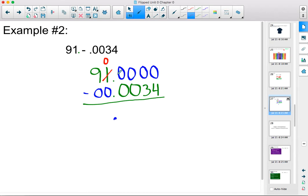When I borrow that one, it becomes ten tenths. I'm going to borrow from that ten. It becomes a nine. That gives me ten hundredths. I'm going to borrow from that ten. It gives me a nine. It gives me ten thousandths. I'm going to borrow from that ten. That gives me a nine. And now I have ten in the ten thousandths place.